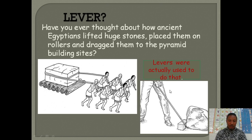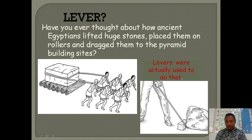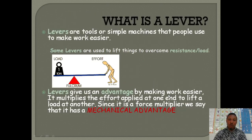You can see a person using a straight bar supported on a knife edge — or what you can also call a pivot — to lift a heavy rock. For you to do this, you have to push the bar down to be able to lift the rock. This simple arrangement here is what we call a lever.